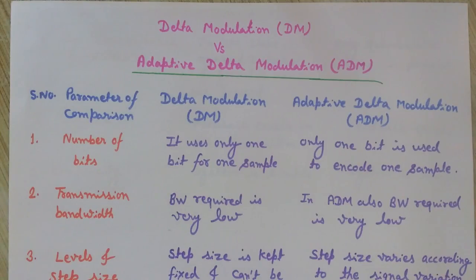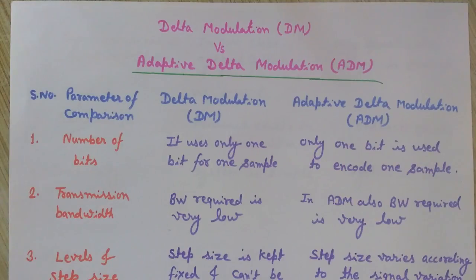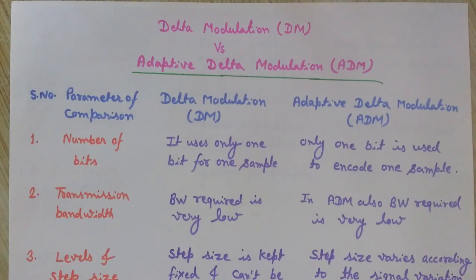To overcome the disadvantages that arise due to the fixed step size, we use another technique called adaptive Delta modulation (ADM). In adaptive Delta modulation, we do not use a fixed step size — the step size varies according to the signal variations, adapted to the changes in the signal. Therefore, the two disadvantages of Delta modulation are not present in adaptive Delta modulation.